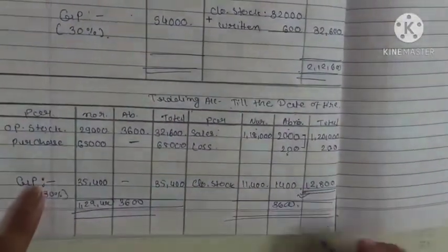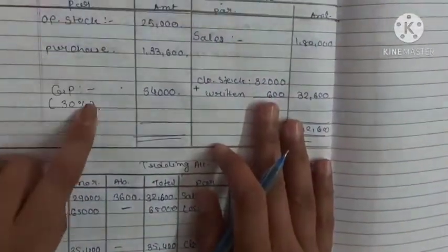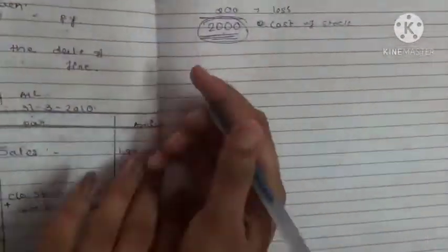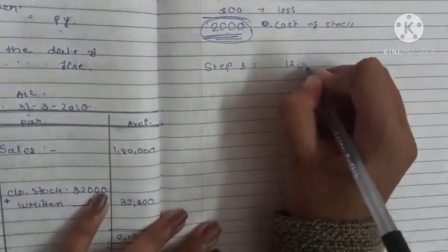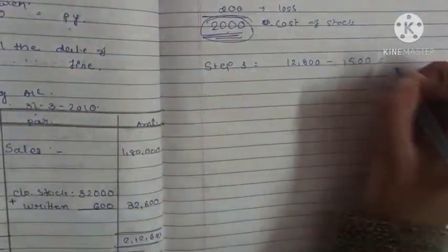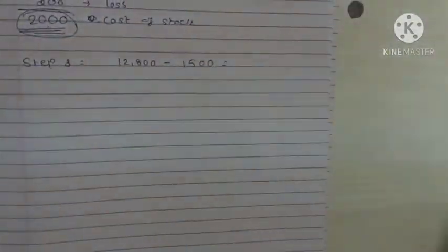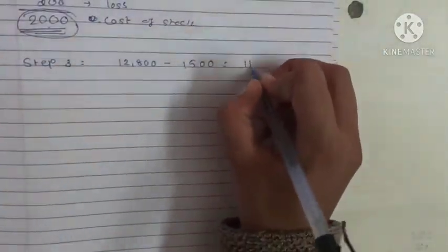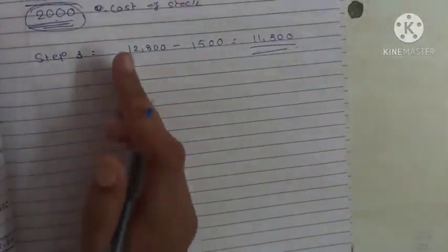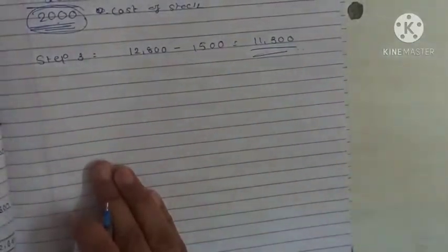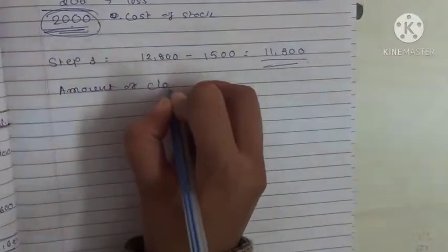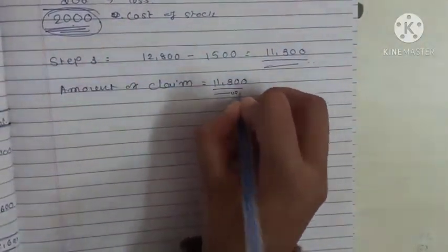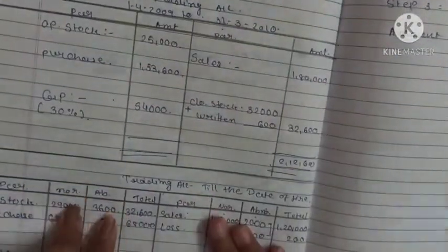Step 1: Closing stock found = Rs. 12,800. Step 2: Rate of gross profit found = 30%. Step 3: Goods saved = Rs. 1,500, so loss = Rs. 12,800 − Rs. 1,500 = Rs. 11,300. Step 4: No insurance policy amount is mentioned, so the amount of claim = Rs. 11,300. This completes Practical Number 15, which dealt with two types of stock — normal and abnormal.